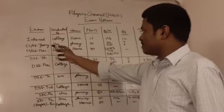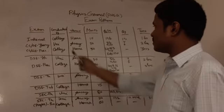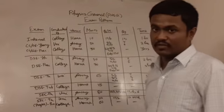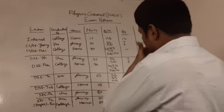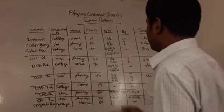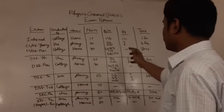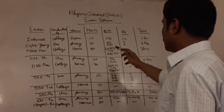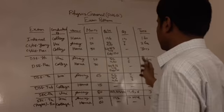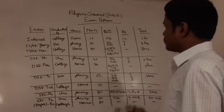Then we have the core course theory exam, which is conducted by the university, so it happens outside of the college. The total marks allotted is fifty, which involves five questions of two marks each out of seven, and four questions of ten marks each that you need to attempt out of six. The total time allotted is two hours.